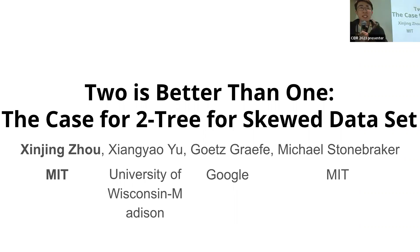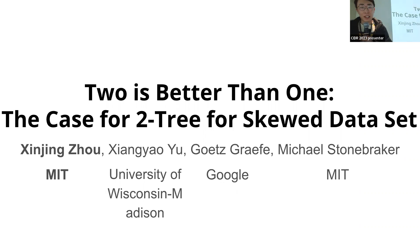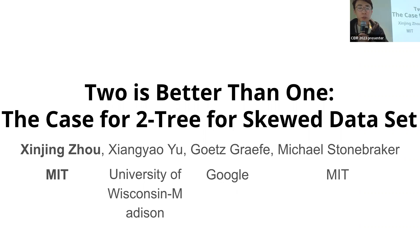Hi, I'm Xin Jing. I'm a second year PhD student at MIT. Today I'll be talking about our work 'Two is Better Than One: The Case for Two, Three, Four SKU Dataset.' This is a joint work with colleagues from University of Wisconsin-Madison, Google, and MIT.